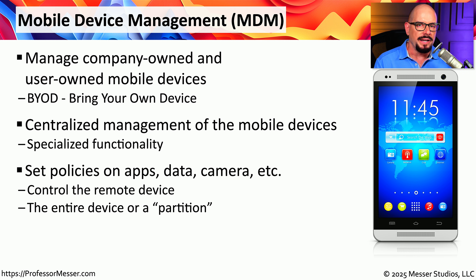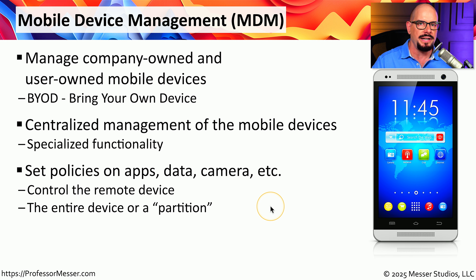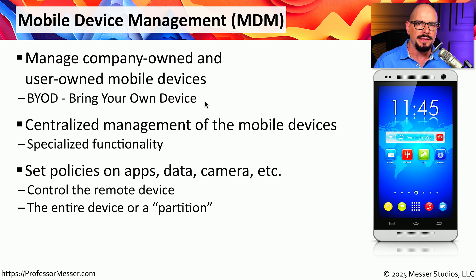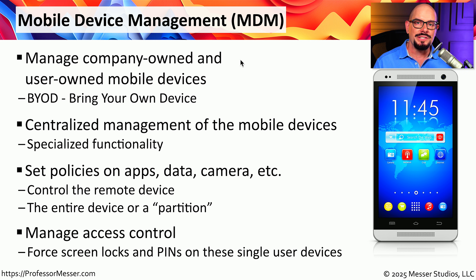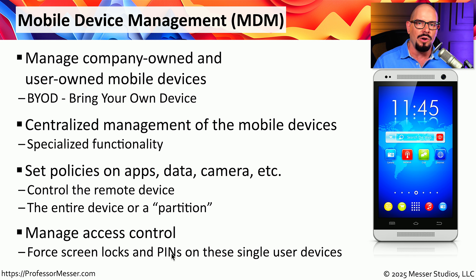The management part of the Mobile Device Manager allows the administrator to define what each device is able to do. They can set parameters for security, define what applications can run on the device, and set up a separate partition for the company's data. This is especially important with BYOD, where some data on the device is personal and other data is owned by the company. If the user leaves the organization, the MDM can delete the company's data while leaving the user's information in place. From this central console, you can also enforce policies requiring a lock screen and a personal identification number.